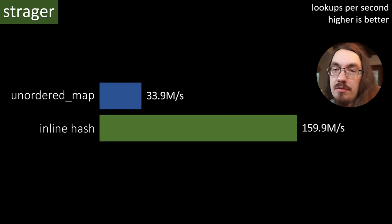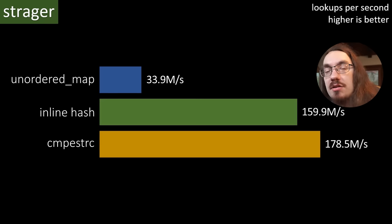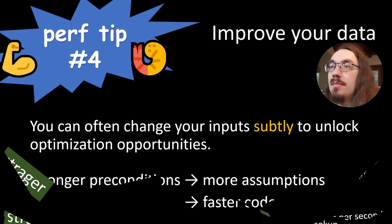Now, if we make sure after we load the input file that we add some little bytes at the end and we run our benchmark better than our inline hash approach from before. So perf tip number four is to improve your data. In our case, we were able to use CompyStirC without any extra bounds checking by changing the input data to have the null bytes at the end. And in general, the more you can make assumptions about the data, the faster code you can make. And how do you make more assumptions? You can massage your data so those assumptions are valid.